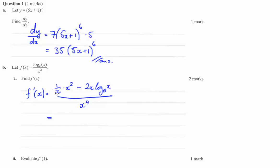So then we have 1 on x times x squared, that becomes x minus 2x times the natural log of x, all over x to the power of 4.